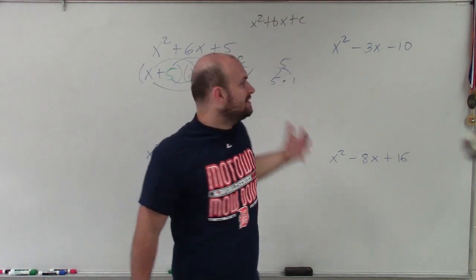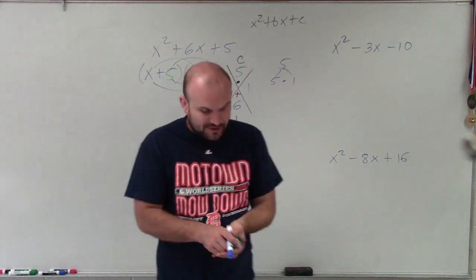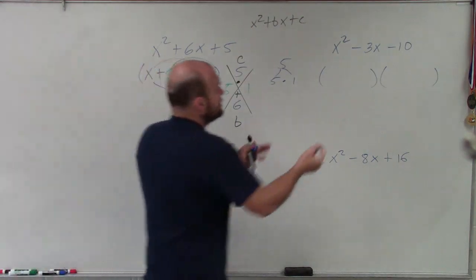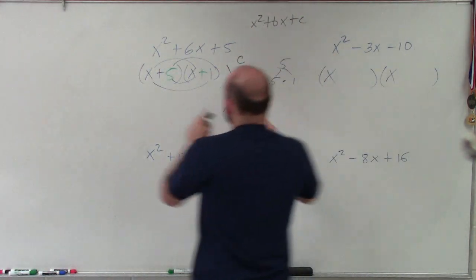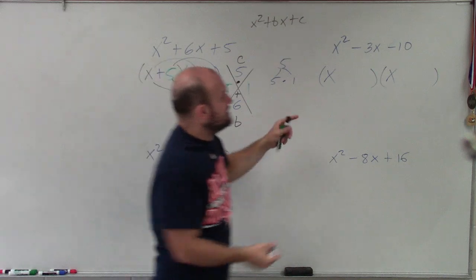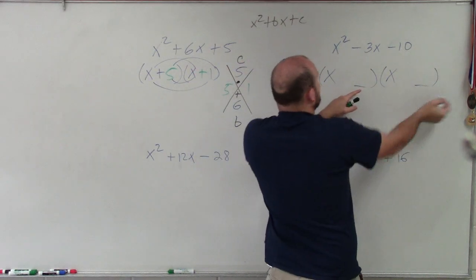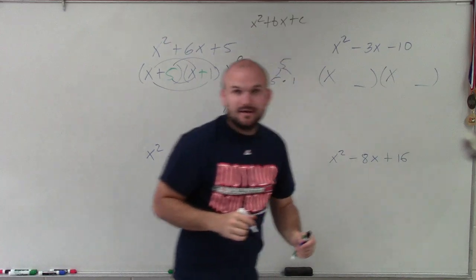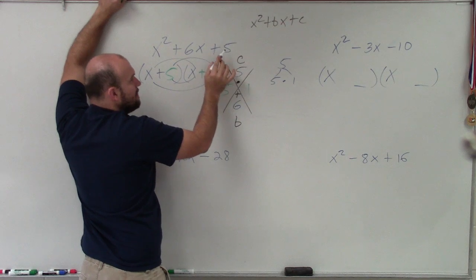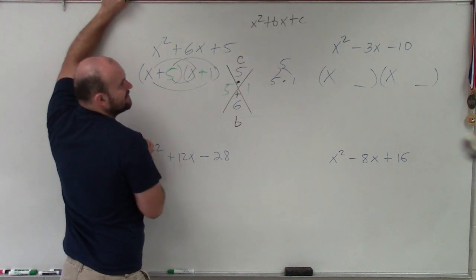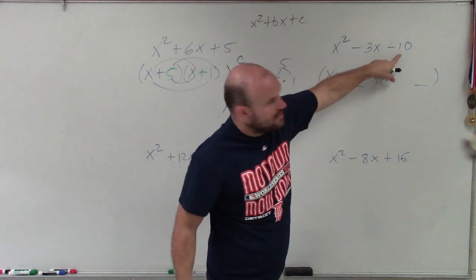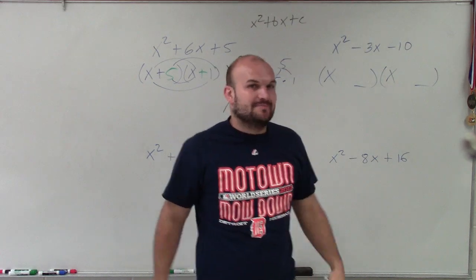If we're going to do this in our head, we know it's going to be two factors. Since we have x squared and a is 1, the first two terms have to be x times x — I have to multiply x times x to give me x squared. So I just need to determine what two numbers multiply to give me negative 10, and what two numbers add to give me negative 3.